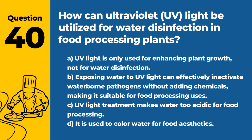Question 40. How can ultraviolet (UV) light be utilized for water disinfection in food processing plants? a. UV light is only used for enhancing plant growth, not for water disinfection. b. Exposing water to UV light can effectively inactivate waterborne pathogens without adding chemicals, making it suitable for food processing uses. c. UV light treatment makes water too acidic for food processing. d. It is used to color water for food aesthetics. Answer: b. Exposing water to UV light can effectively inactivate waterborne pathogens without adding chemicals, making it suitable for food processing uses. UV disinfection is a safe and efficient method for ensuring water quality.